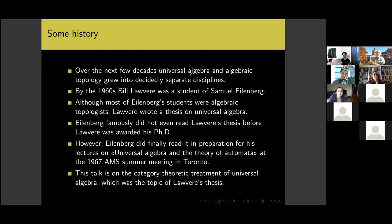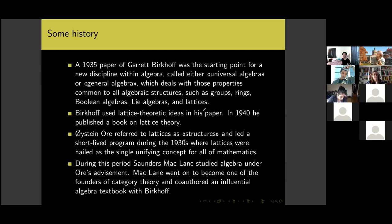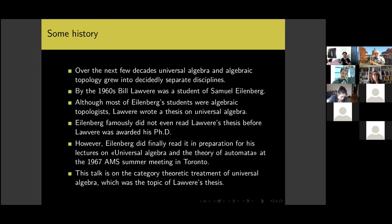Over the next few decades, universal algebra and algebraic topology grew into decidedly separate disciplines. By the 1960s, Bill Lawvere was a student of Sammy Eilenberg, who was another founder of category theory. Although most of Eilenberg's students were algebraic topologists, Lawvere wrote a thesis on universal algebra. Eilenberg famously did not even read Lawvere's thesis before the PhD was awarded.